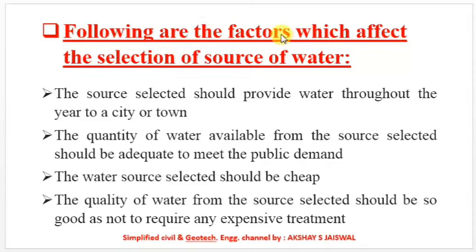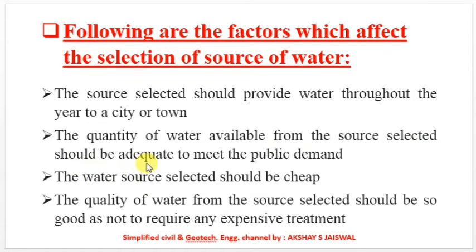The following are the factors which affect the selection of a source of water: the source should provide water throughout the year; the quantity of water available should be adequate to meet public demand; the source should be cheap; and the quality of water should be good enough not to require any expensive treatment.